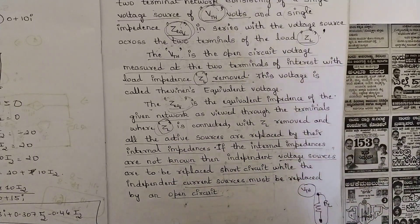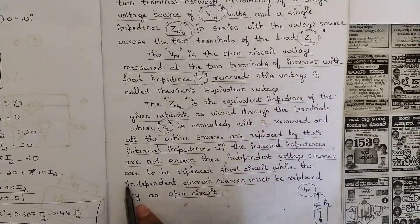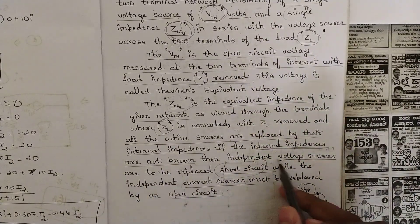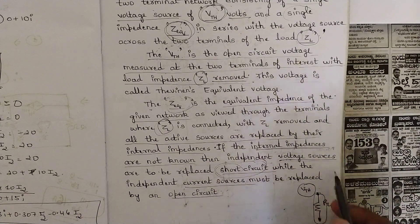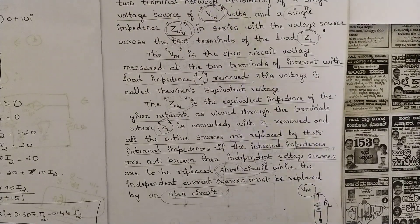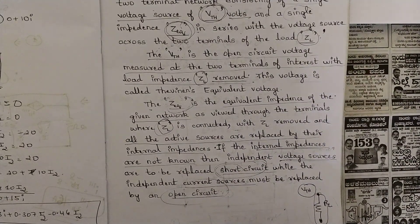This equivalent impedance is found after removing the load impedance R_L and replacing active sources with their internal impedances. If internal impedances are not known, then independent voltage sources are replaced by short circuit and current sources are replaced by open circuit — the same rule as discussed in superposition theorem. Keep that in mind. This completes the full statement of Thevenin's theorem.